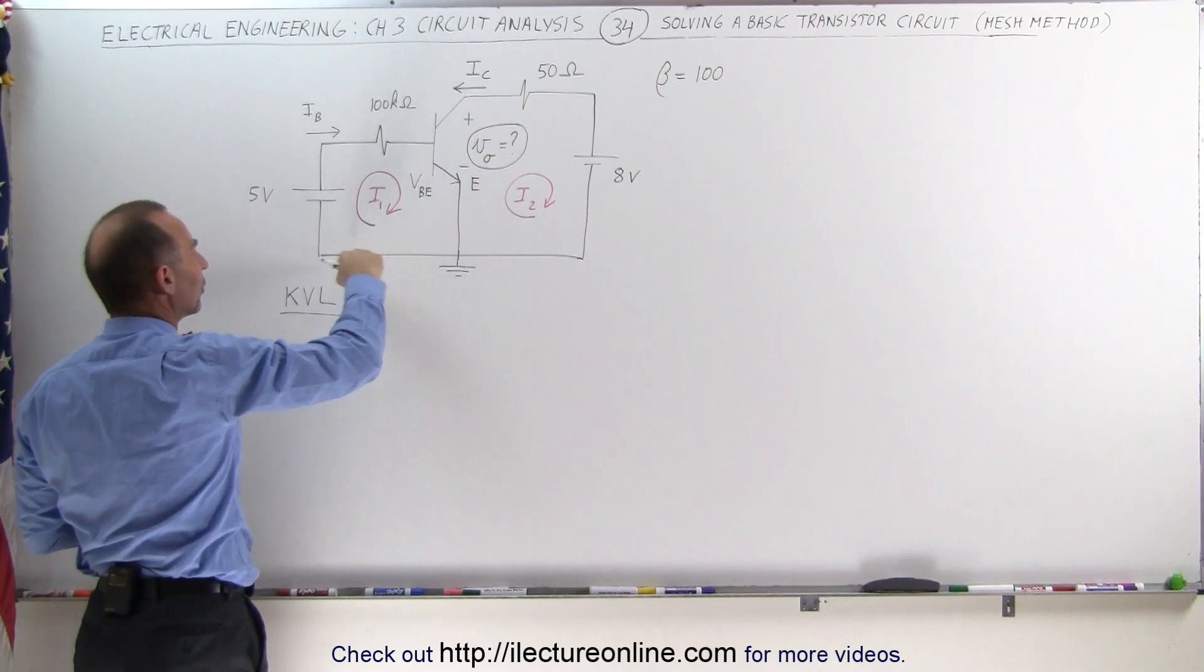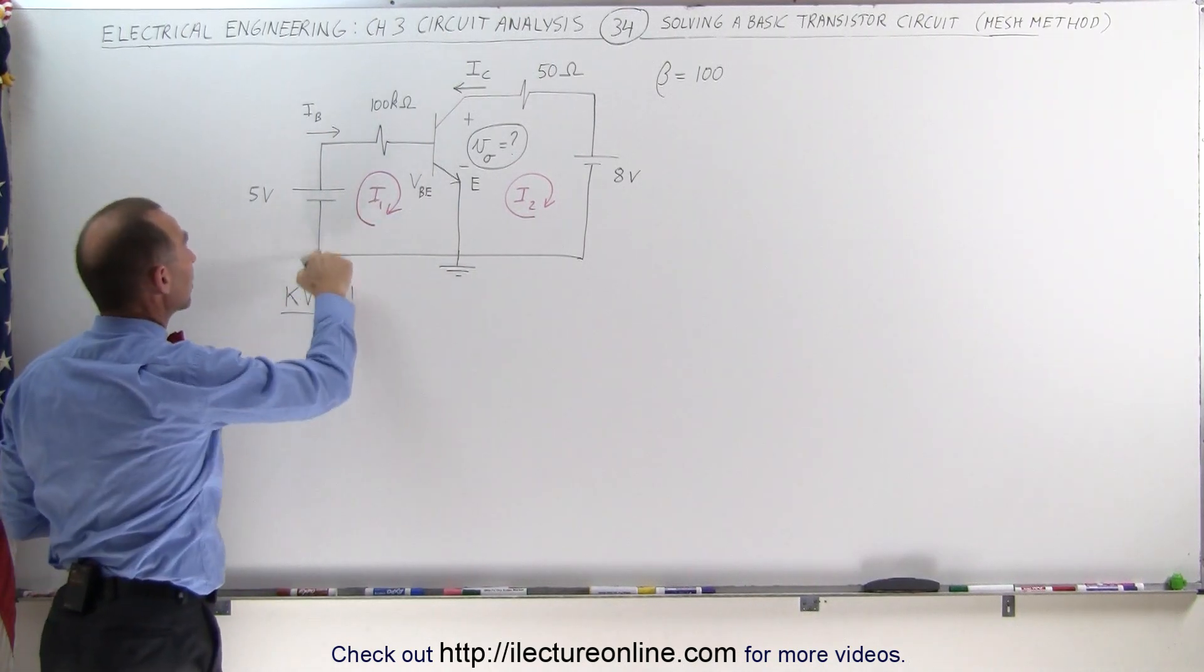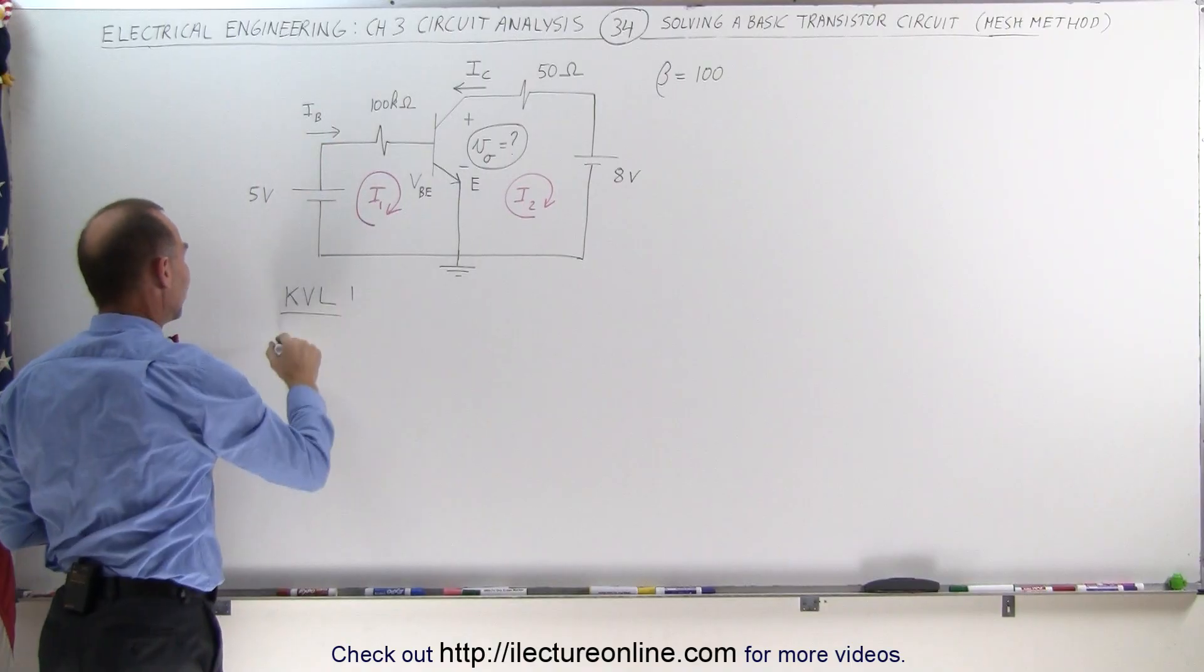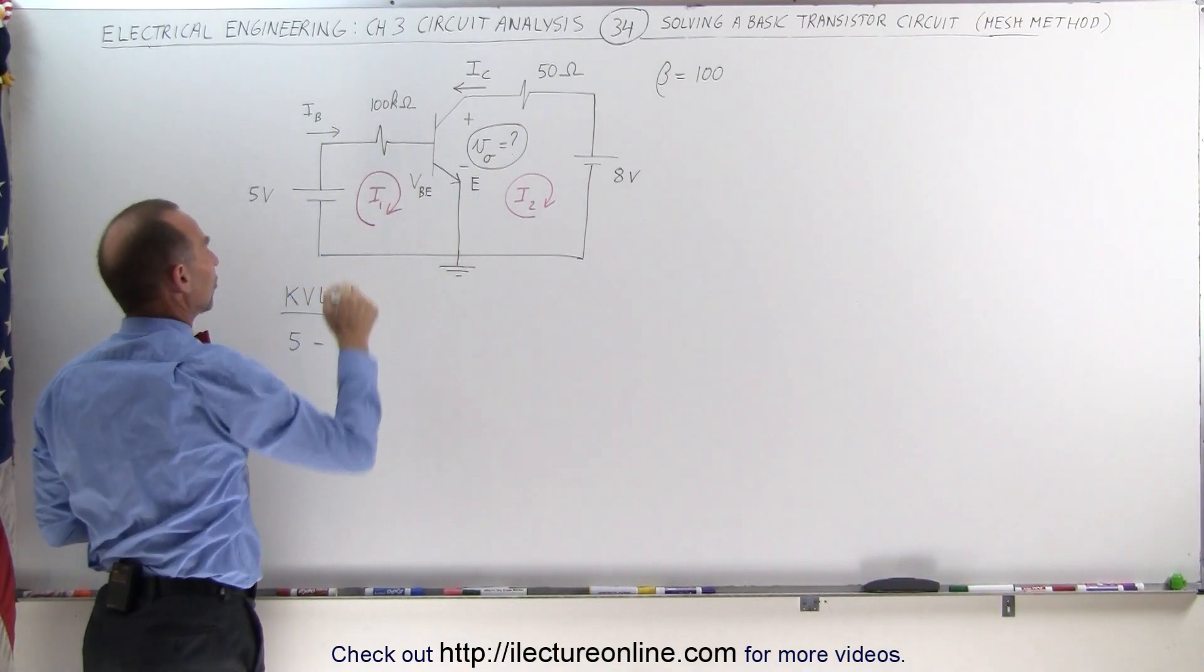Number one, we're going to start at this point, go all the way around the loop and add up all the voltages. Starting from here, going to there, that's a 5 volt rise minus the voltage drop across the resistor.